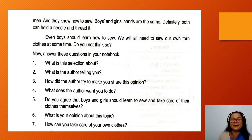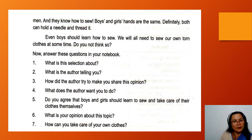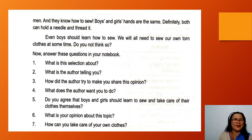Now let's answer the questions below orally. For number one, what is this selection about? It is about learning to sew. Number two, what is the author telling you? The author is saying that boys should also learn how to sew. Number three, how did the author try to make you share this opinion? The author says that boys can hold needles, can mend their own clothes, and that some men are good at this job.